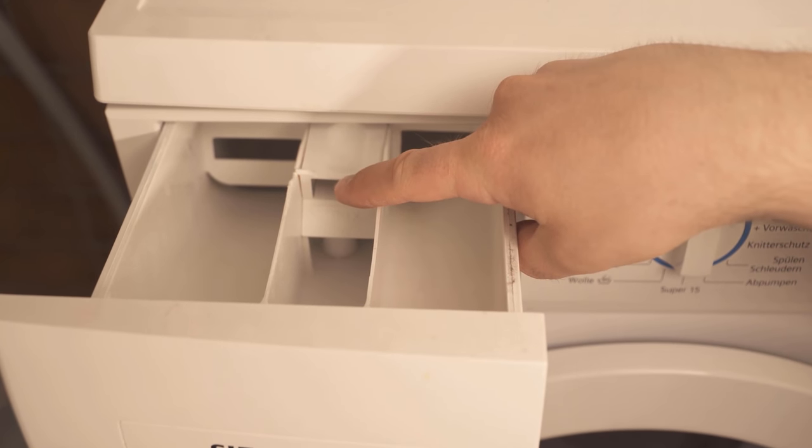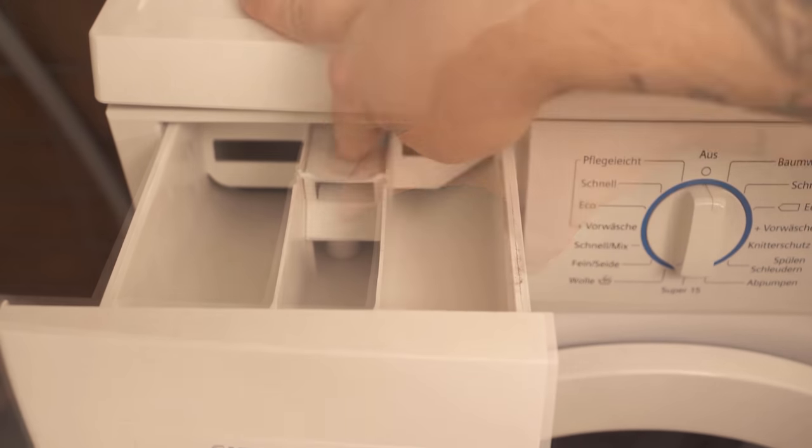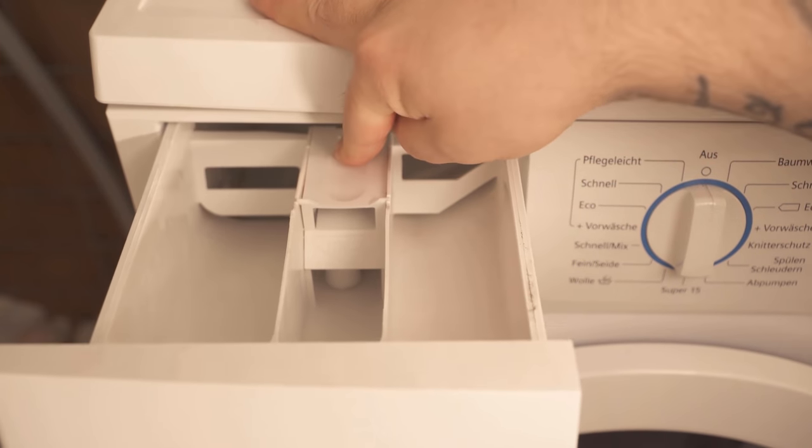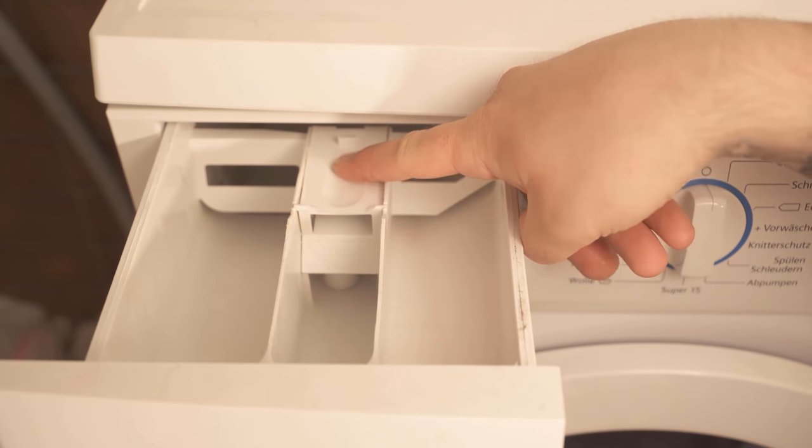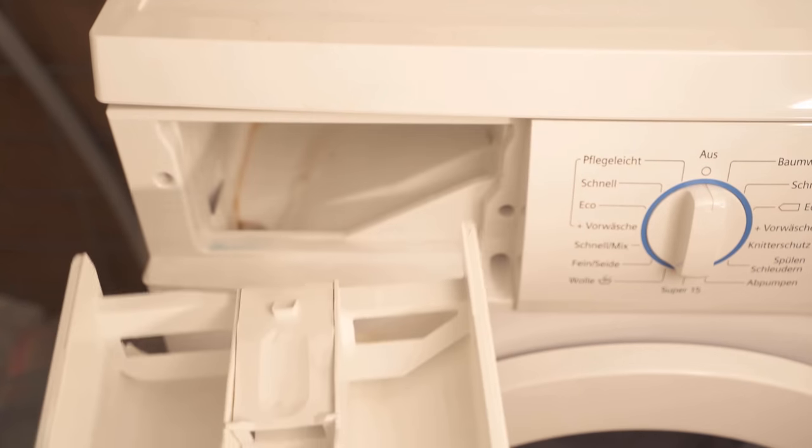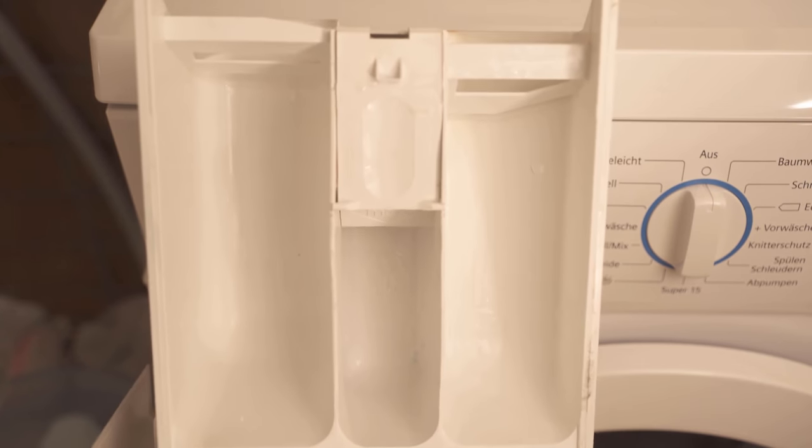But as you may have noticed, you can't just pull it out because something blocks it. Most of the time, you'll find a lever in the middle of the drawer, maybe with a push symbol on it. Then you can remove the drawer, and we also see directly that it's already a little bit dirty.